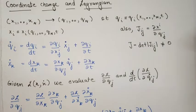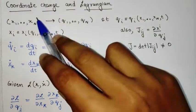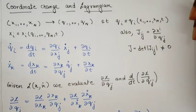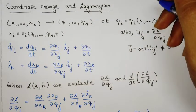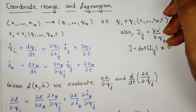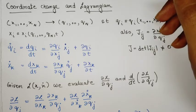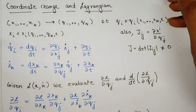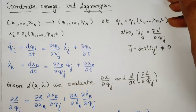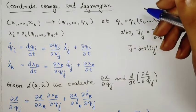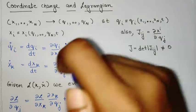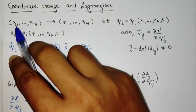In this video we will discuss coordinate change and how the Lagrangian changes under the coordinate change. Specifically, we will discuss an example where we observe a free particle in a rotating frame, and we will see the implications: the pseudo forces, the Coriolis force, and the centrifugal force.